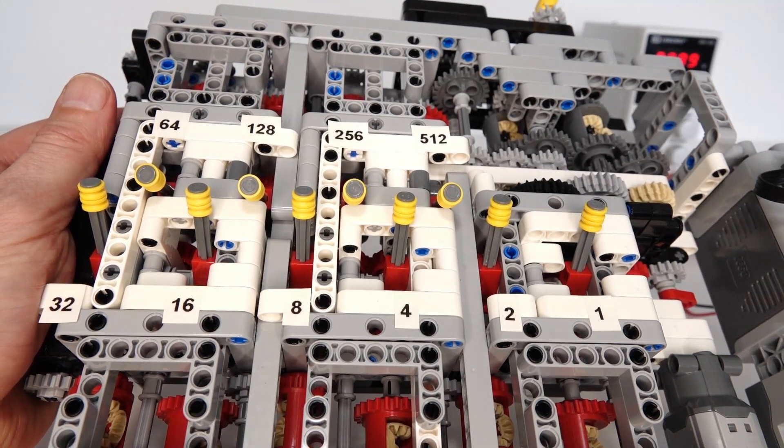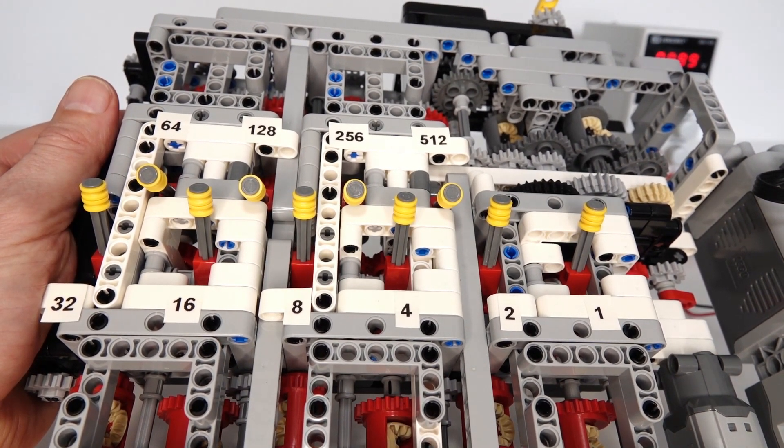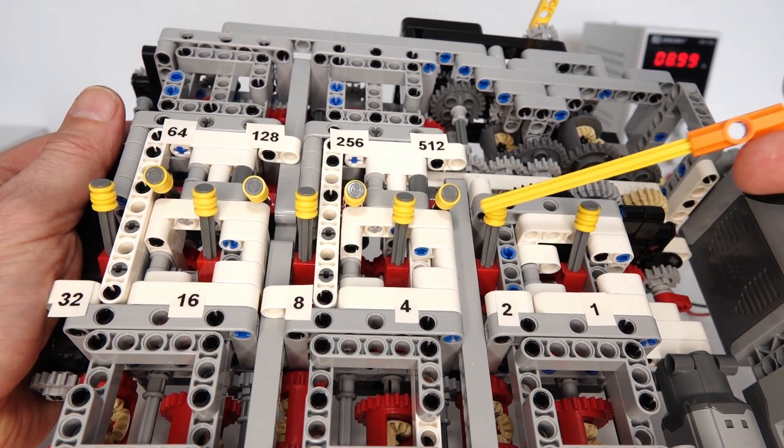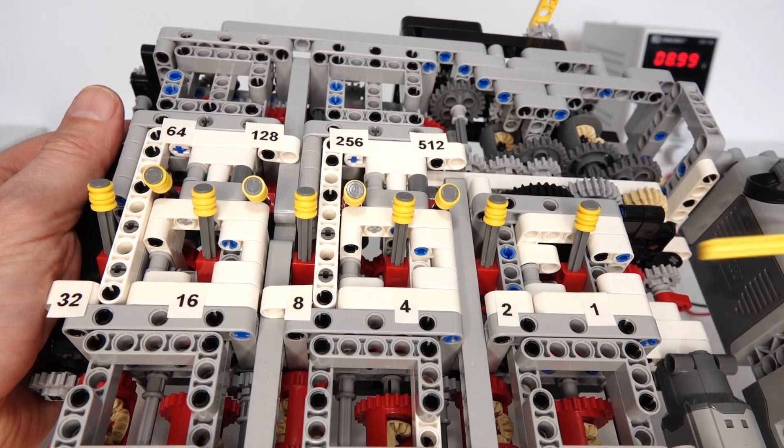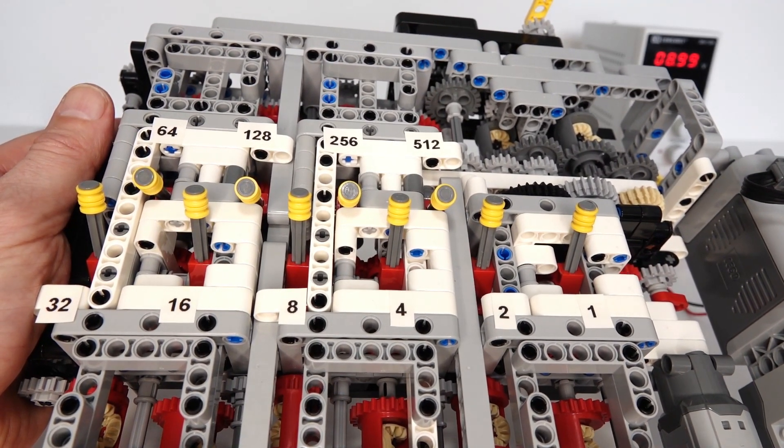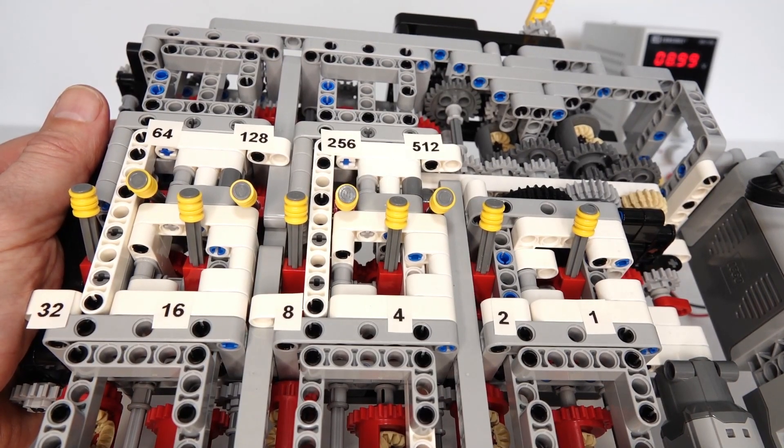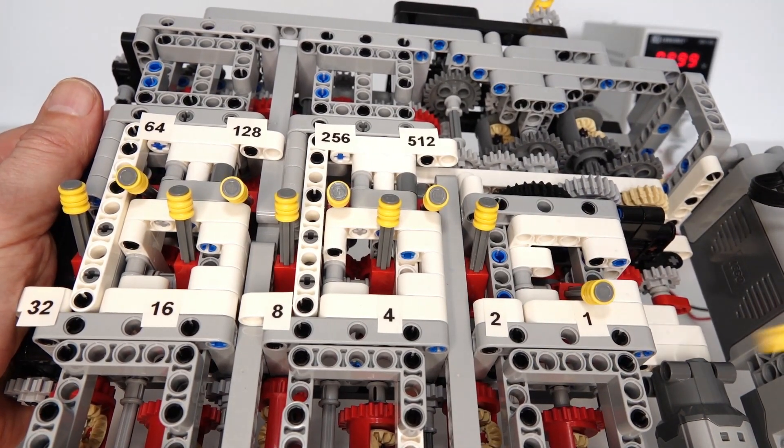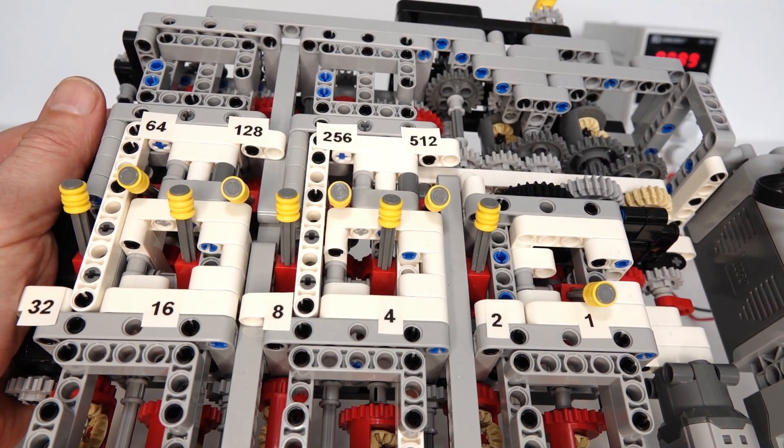What happens is that every time you turn on one of these switches to the number, it adds that number to the overall output speed divided by 1000. So, for example, if you want to create a speed of 1 to 1000, you just switch this switch here. It's got the label 1 on it. It becomes 1 out of 1000.